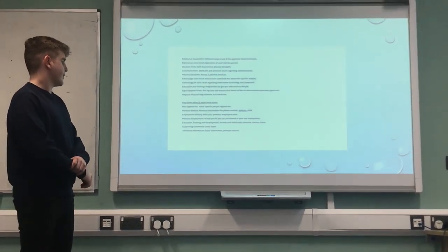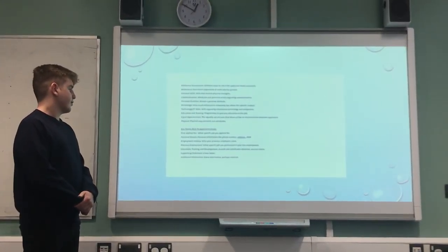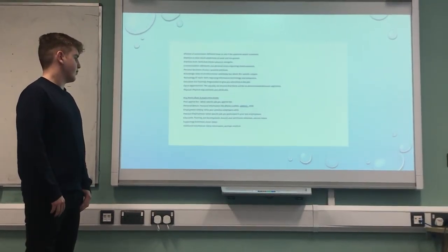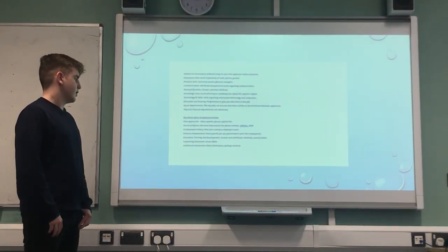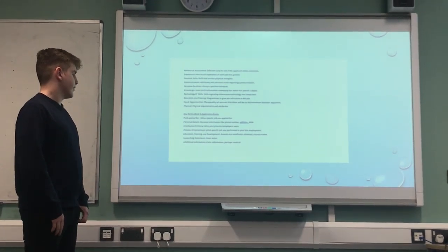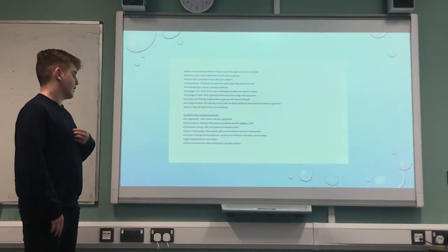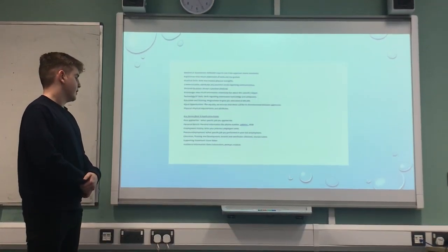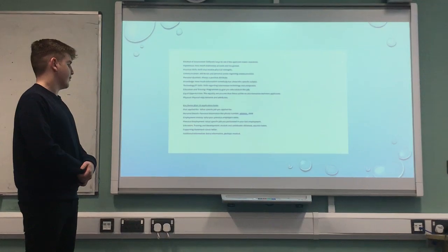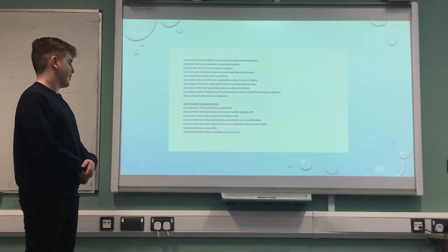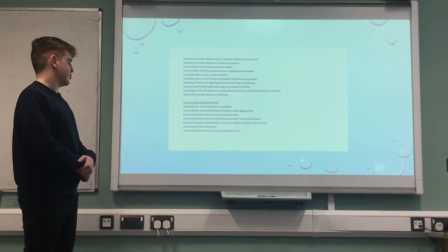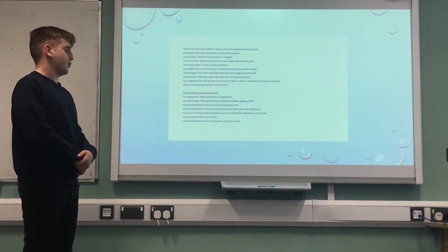Part three is the application form key terms. Post applied for: what specific job you applied for. Personal details: personal information like phone number, address, date of birth. Employment history: who your previous employers were, previous employment or specific job you performed in your last employment. Education, training and development: awards and certificates obtained and courses taken. Supporting statement: cover letter. Additional information: extra information, perhaps medical, which you feel is necessary for your employer to know.